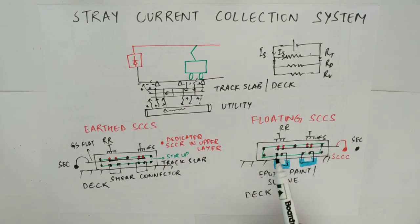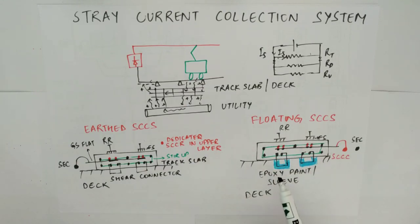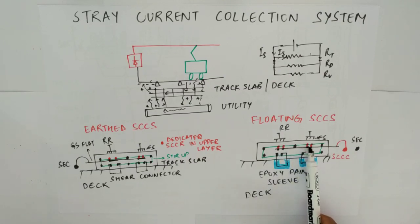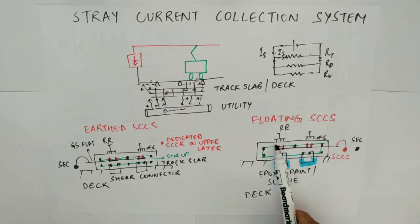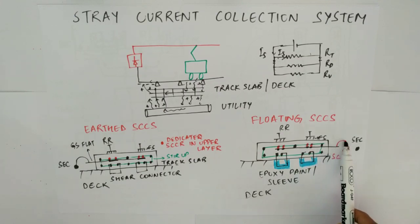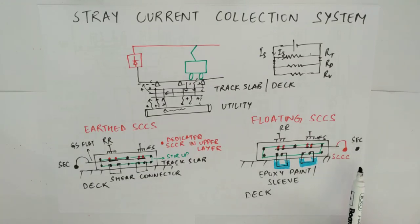So suppose this is your running rail and this is your fastening system. After this, the stray current enters into your track slab and this is your deck. In this case you have some dedicated stray current collection rebars, which are marked in red, and these are your structure rebars marked in black, which are connected together through stirrups. Remember that the dedicated stray current collection rebars must be directly under the running rails so that they catch most of the current. Along with this, we have a galvanized steel flat which is welded to these dedicated stray current collection rebars, and from here it is connected to a dedicated stray current collection cable (SCCC), which is separate from the earthing cable and runs parallel along the track.